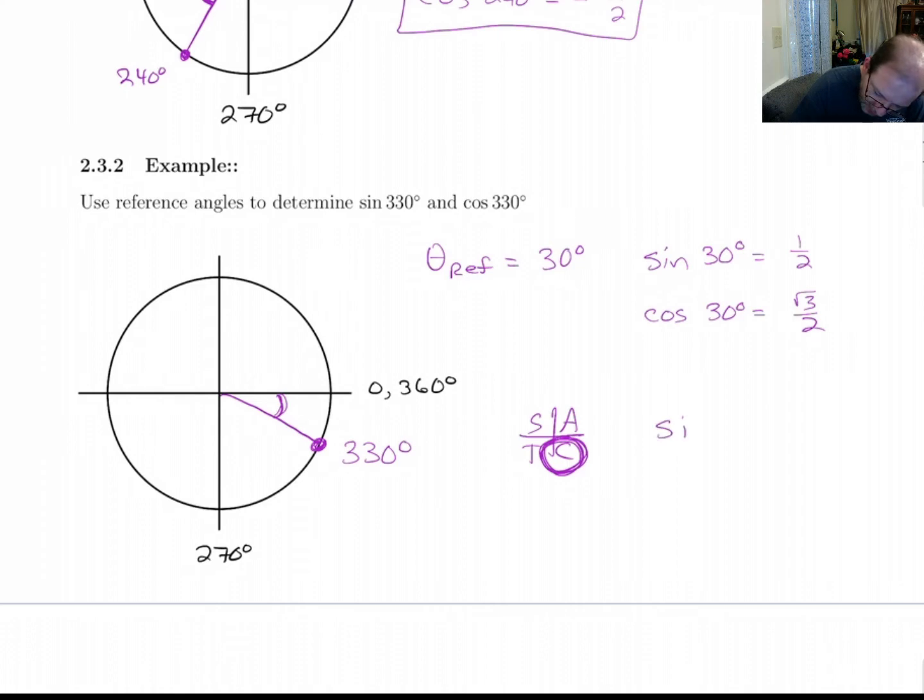So if I come over here and I write out sine of 330 and cosine of 330, cosine is positive, sine is negative, and we pull our values from up here. And that's our answer.